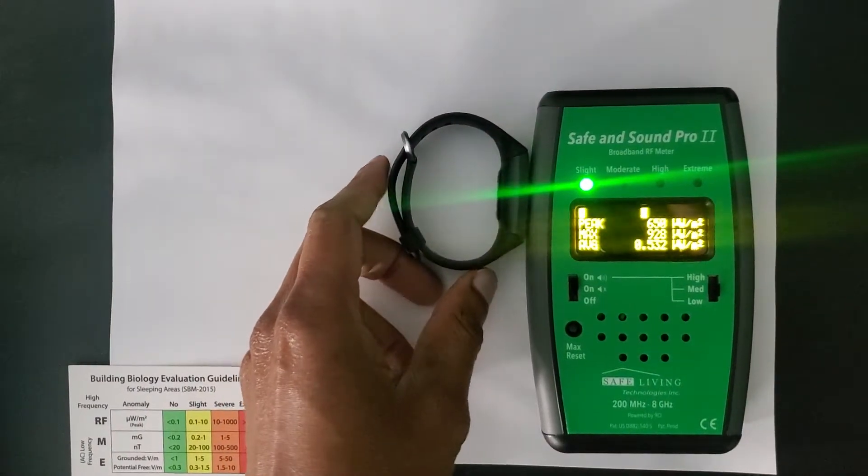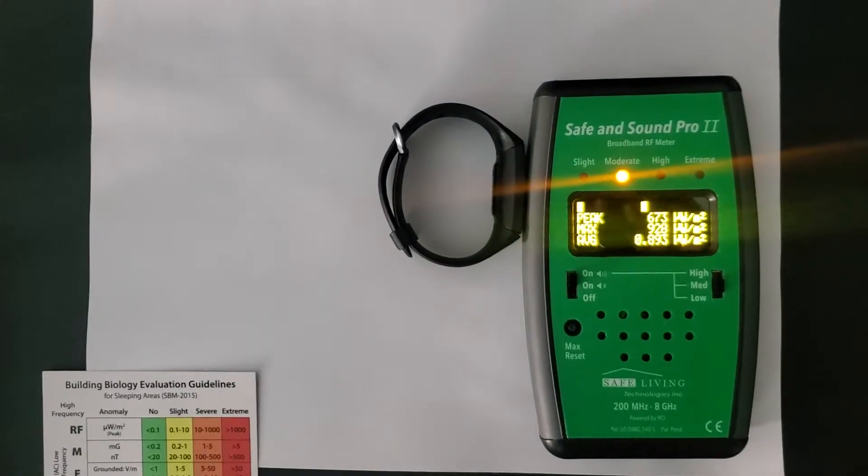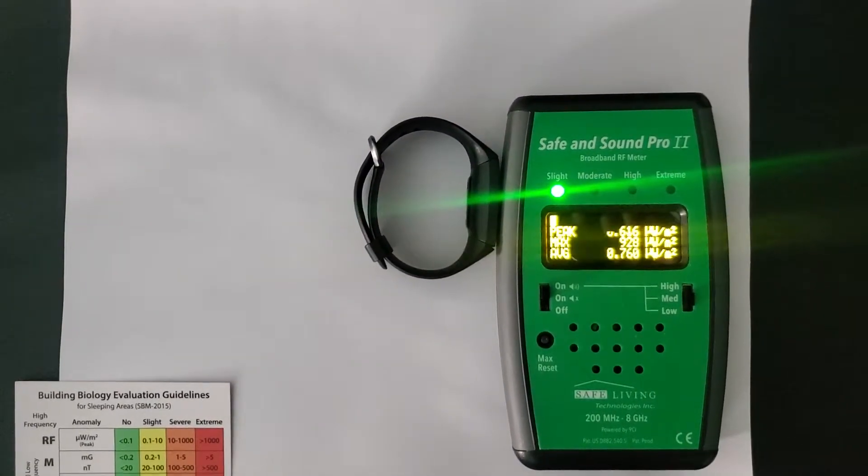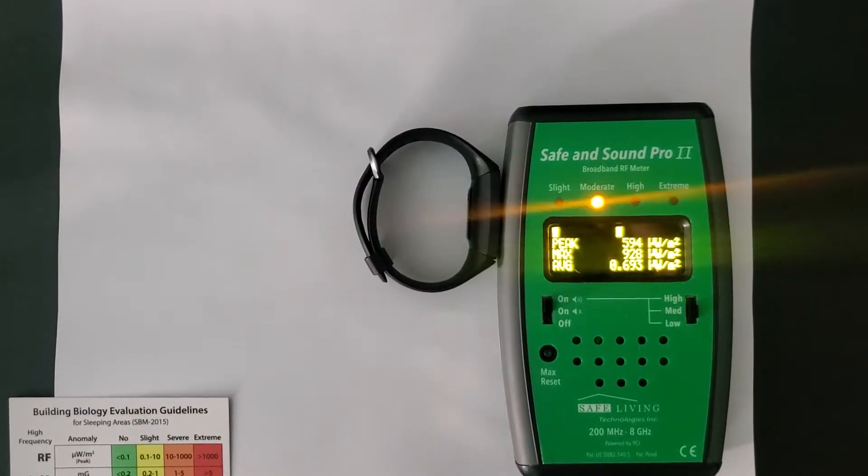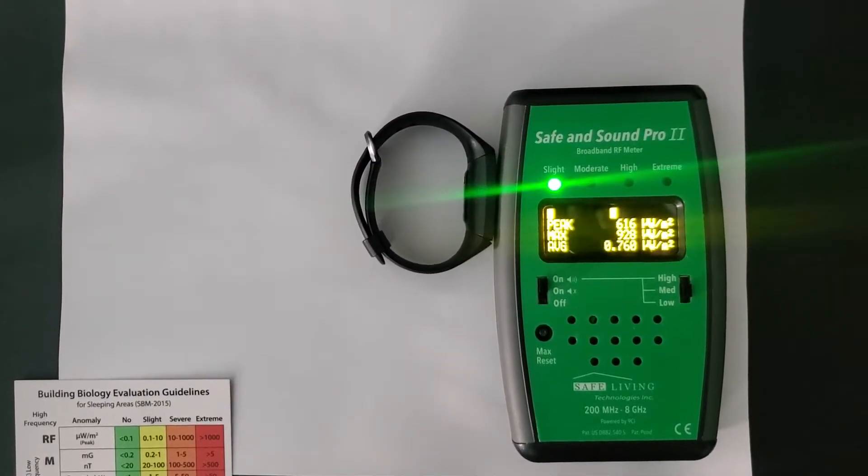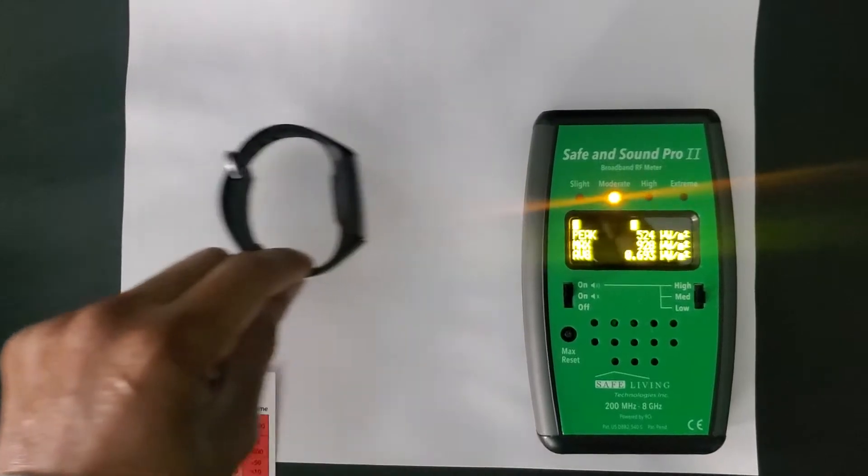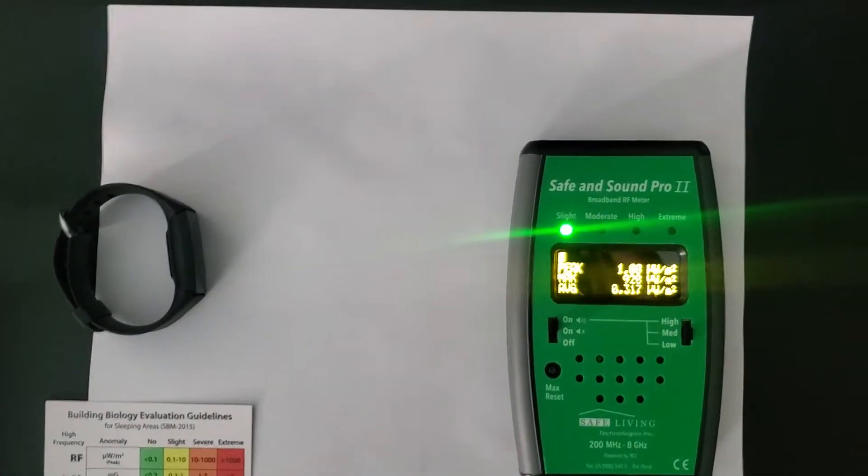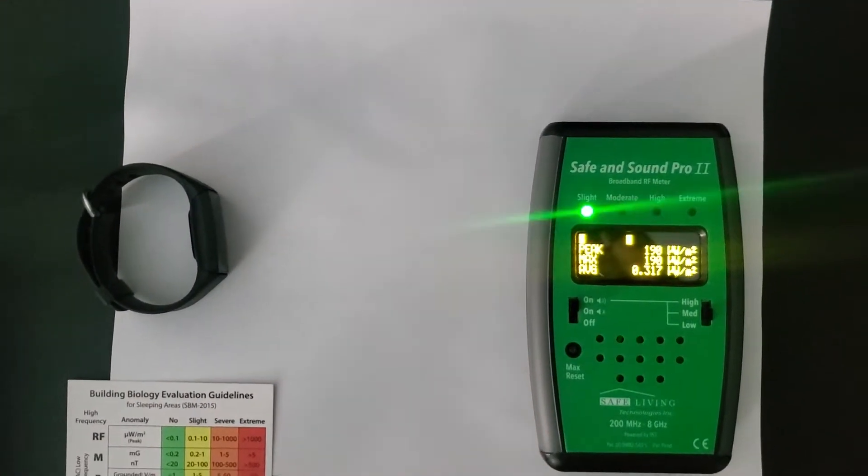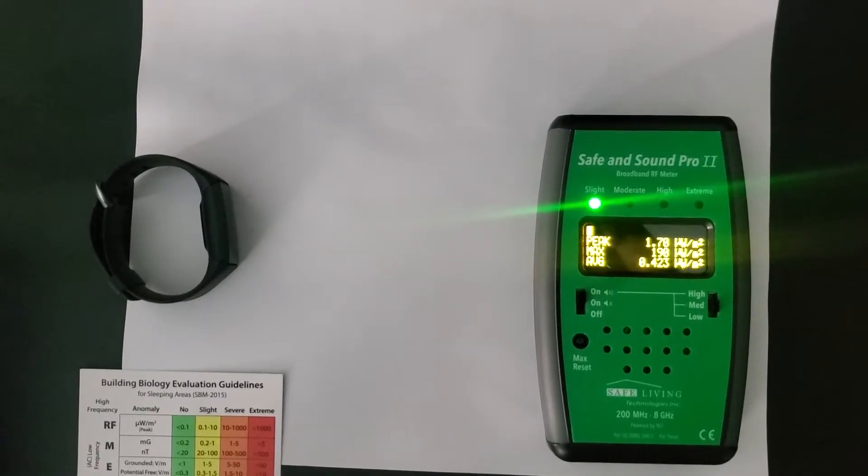Let's move it right there as it'd be touching your skin if you were wearing this and you're getting pretty high pulses there. Let's move it back. Let's reset the meter so we're back to about 200.